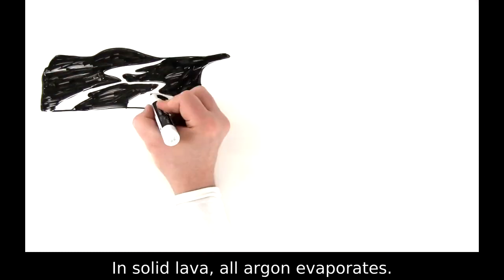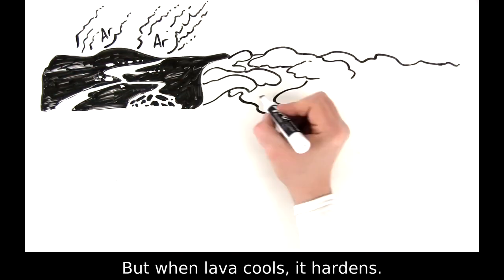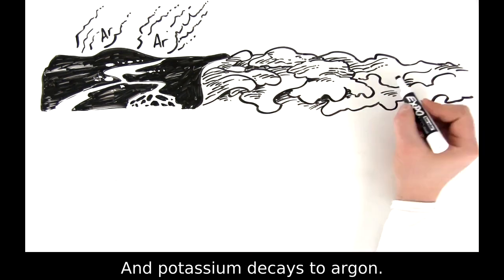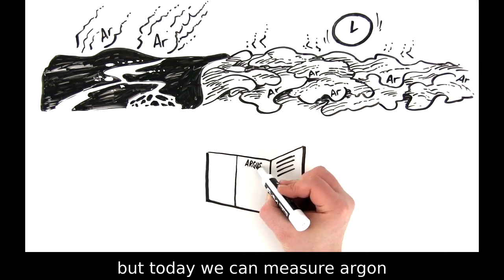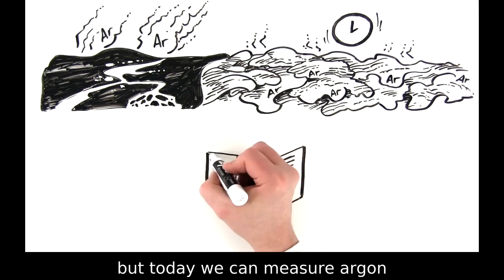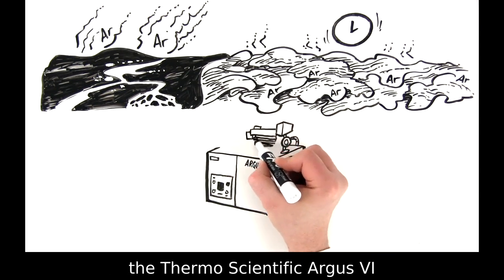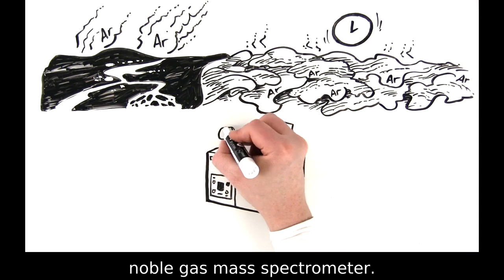In solid lava, all argon evaporates. But when lava cools, it hardens, and potassium decays to argon. Not only is this new argon trapped inside, but today we can measure argon and its isotopes using systems like the thermoscientific Argus-6 noble gas mass spectrometer.